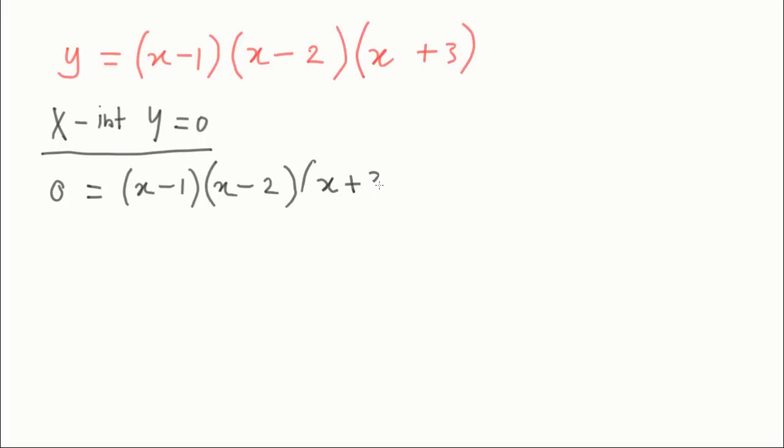You then need to use the null factor law. The null factor law or zero factor law is if you have A times B, or two things multiplied together that equals zero, then either of them have to be zero. So either A is zero or B is zero, or in fact they're both zero.